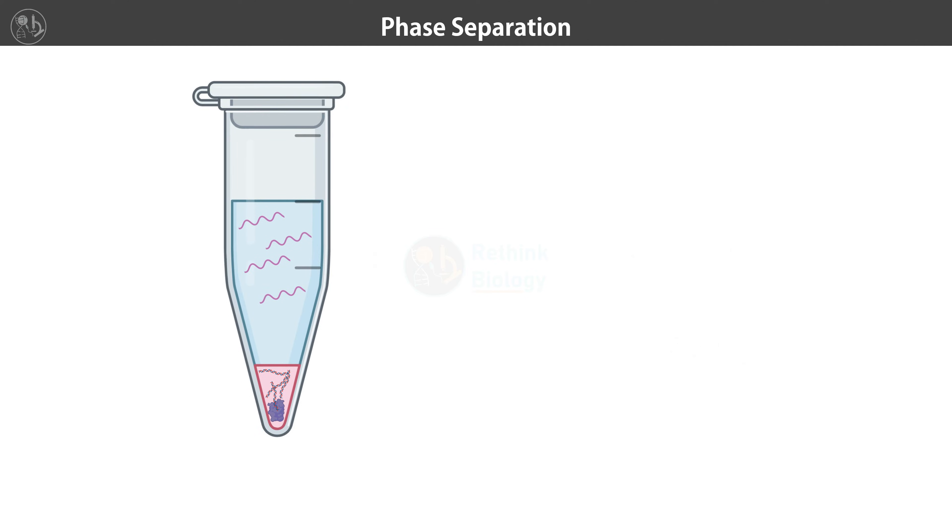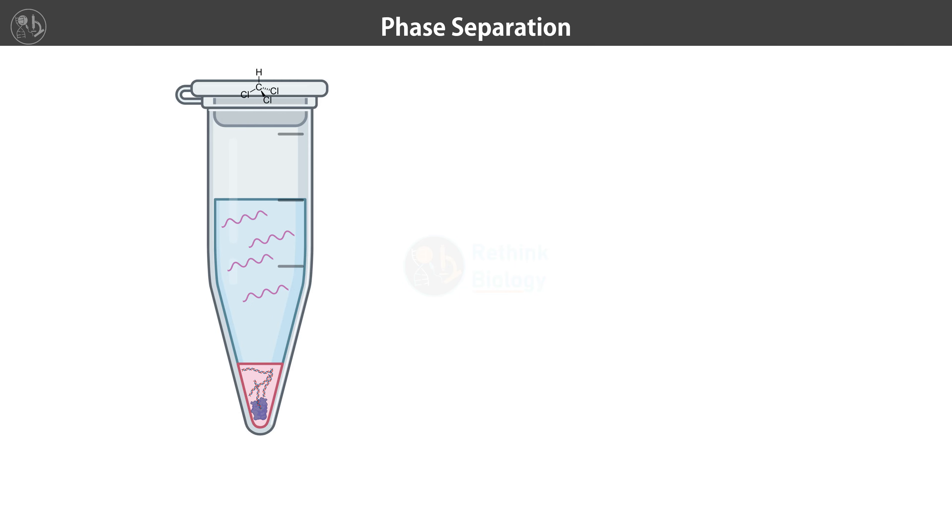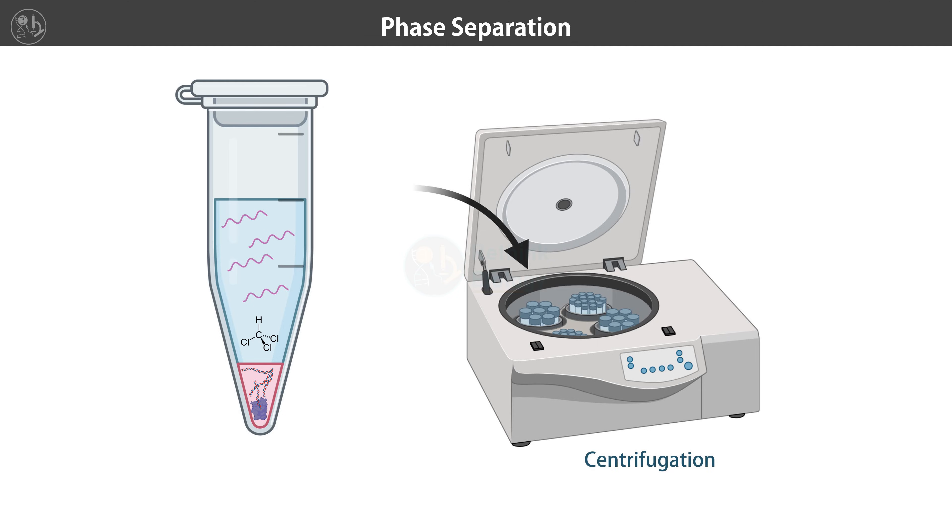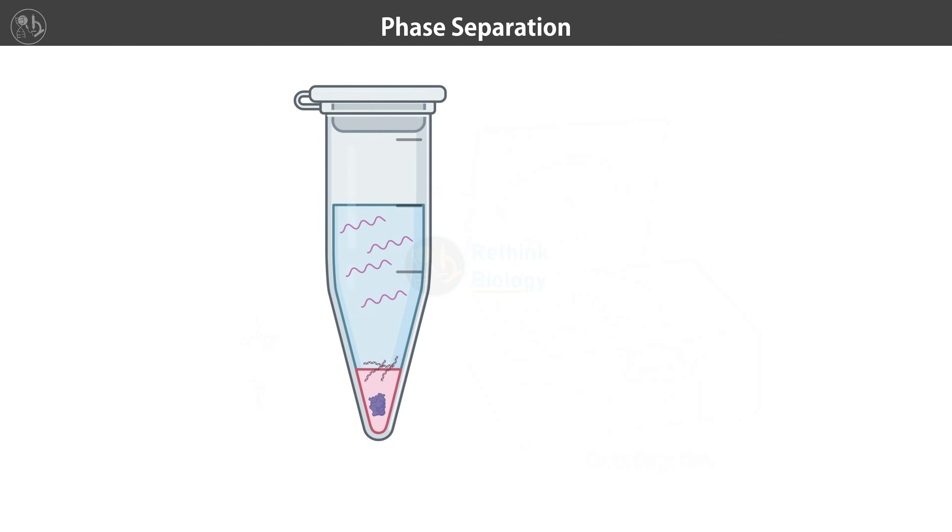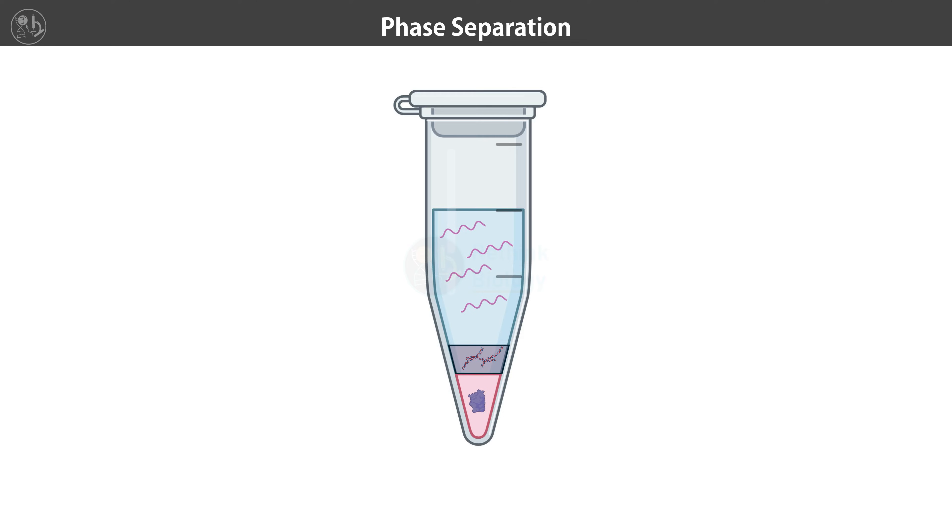To get distinct separation between aqueous and organic phases, chloroform is used. When chloroform is added to the mixture and centrifuged, it forms a distinct layer below the aqueous phase due to its higher density. This leads to the formation of three layers: the top aqueous phase contains RNA because of the polar environment; the interface contains DNA, which is less polar than RNA and gets trapped at the interface; the bottom organic phase contains proteins and other hydrophobic molecules that are drawn to the final chloroform layer.